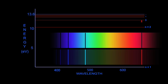When an electron jumps from the n equals 3 shell to the n equals 2 shell, red light is emitted. When an electron jumps from the n equals 4 shell to the n equals 2 shell, aqua light is emitted. When an electron jumps from the n equals 5 shell to the n equals 2 shell, blue light is emitted. When an electron jumps from the n equals 6 shell to the n equals 2 shell, violet light is emitted.